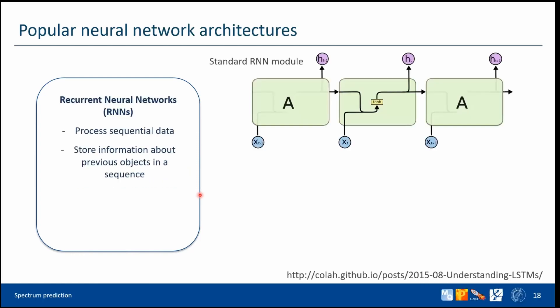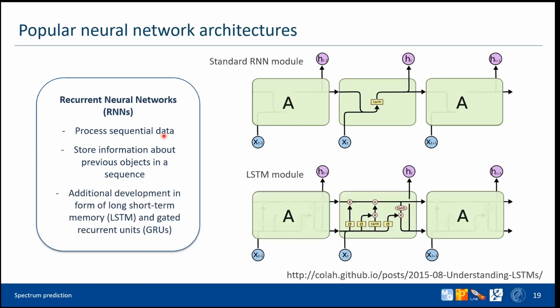Recurrent neural networks are designed to process sequential data, which makes them naturally good for processing peptide sequences. Classic recurrent neural network models had trouble processing information spread across long distances, which is important in spectral prediction. However, more advanced models such as Long Short-Term Memory (LSTM) and gated recurrent units address this issue.